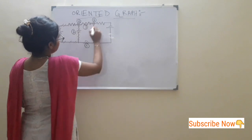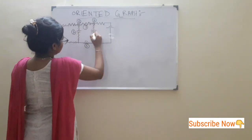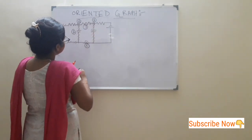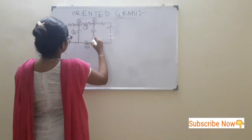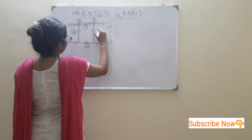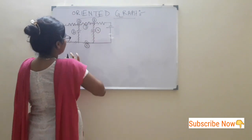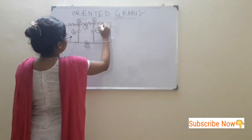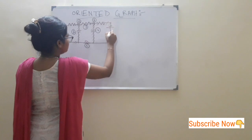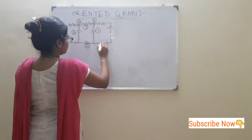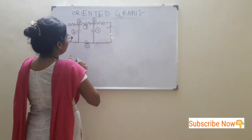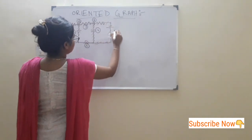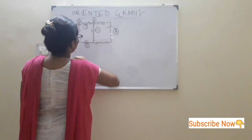This is another branch, numbered by 4. And this one is the last branch, numbered by 5.